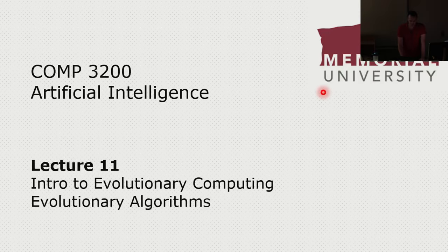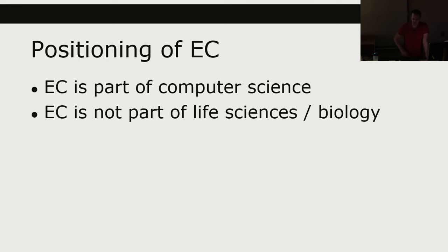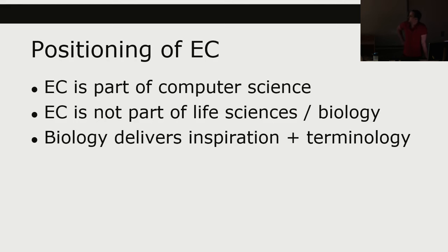So what is evolutionary computation? Wherever I say EC or EA in the slides, it refers to that. EC is a part of computer science and algorithms — it is not necessarily a part of life sciences or biology. If you take a degree in biology, you probably won't have to implement a genetic algorithm. It is a computer science algorithm that has its inspirational roots in the biological sciences.